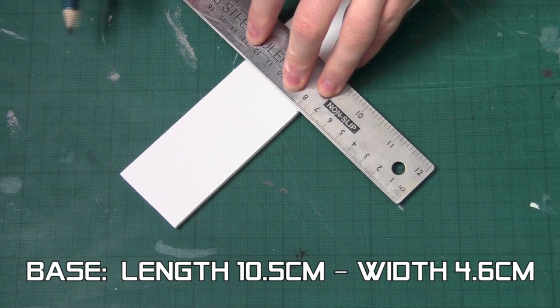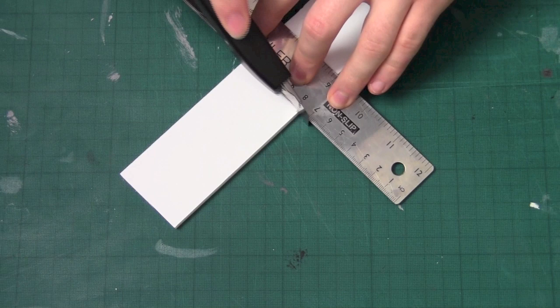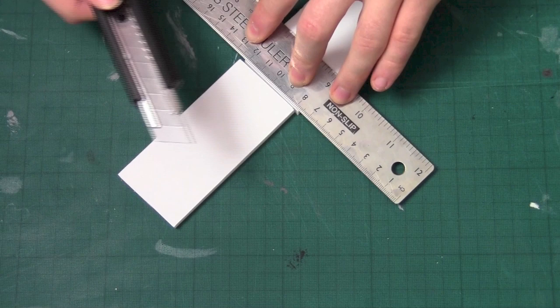When cutting the foam board make sure your fingers are away from the ruler edge and then do your cut. It's good to get into the habit of always retracting your blade back into the handle when you finish with it.